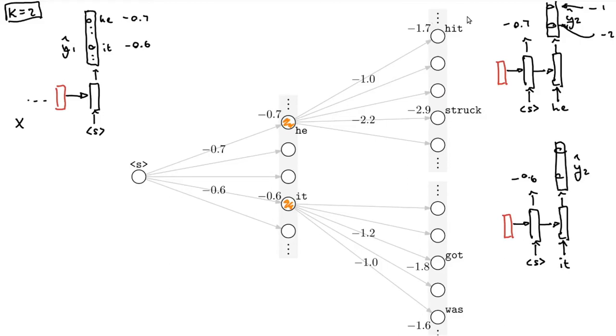What do you do now? So I've got he hit minus 1.7, he struck minus 2.9, got it was minus 1.6 and it got minus 1.8. What do I do next? We have a beam search of two, beam width of two. We're keeping track of the two best paths. I'll give you four paths and their scores. The one path is he hit minus 1.7, he struck minus 2.9, it got minus 1.8 and it was minus 1.6. Each one of those is a hypothesis, a partial hypothesis for the translation. I have a beam width of two, so I'm keeping track of the two best translation hypotheses throughout. What do I do next?